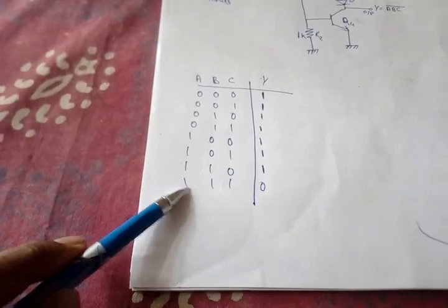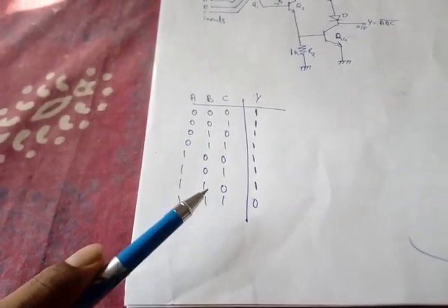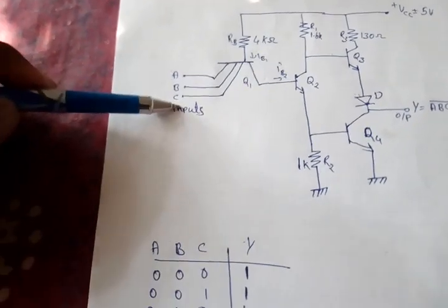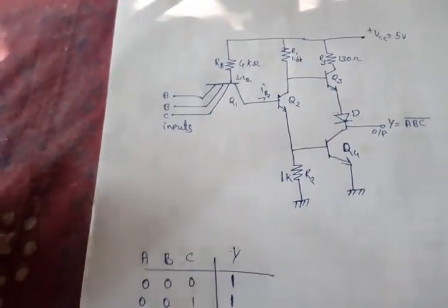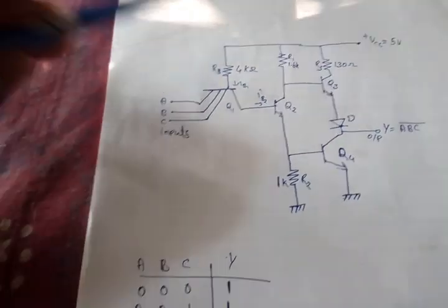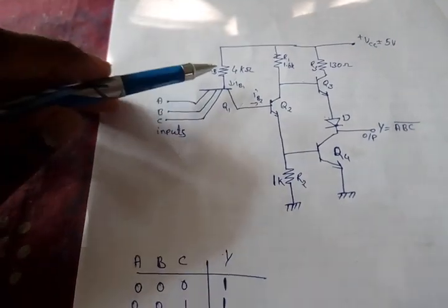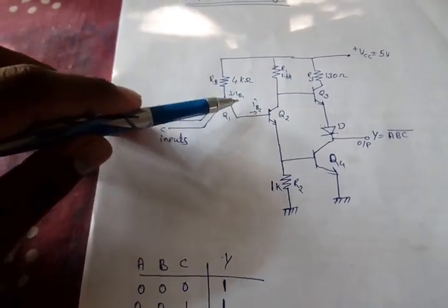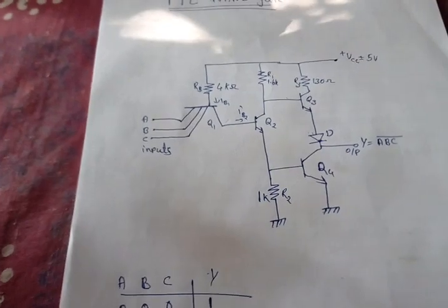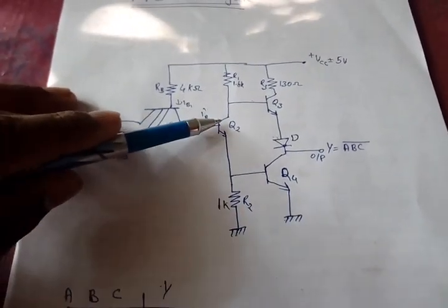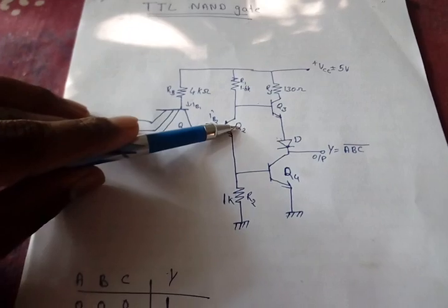Now, we can discuss the case when all of the inputs are high. When all of the inputs are high, all of the base-emitter junctions will be reverse biased. But then, the collector-base junction will be forward biased. Thus, the current IB2 will be sufficient to switch on the transistor Q2.